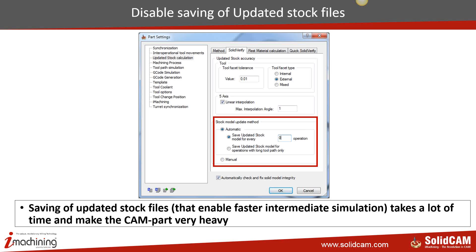By default, the 'save updated stock model for every operation' is set to 1, meaning after every operation it saves the stock. If you don't want any saving, set it to zero. Or you could set it to, say, 10 for a file with 30 toolpaths — telling SolidCAM to save updated stock only every 10th operation. If you want to simulate the 11th operation, it reloads the 10th stock. If you want the 14th, it recalculates from the 11th, 12th, and 13th.